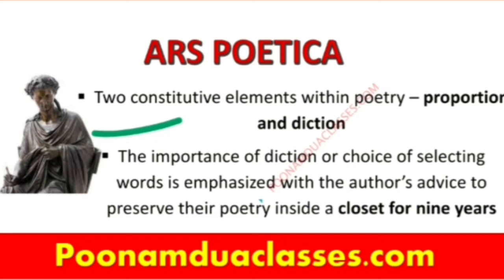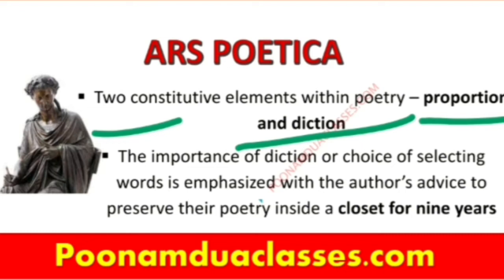There are two constitutive elements within poetry: proportion and diction. Horace commences Ars Poetica by discussing these two elements. Regarding proportion, he explains it to the young boys of the Piso family. He says that if a woman's neck is painted onto the picture of a horse, it would be funny and ridiculous. So there should be proportion — considering what you are writing, where, for whom, and what your subject is.